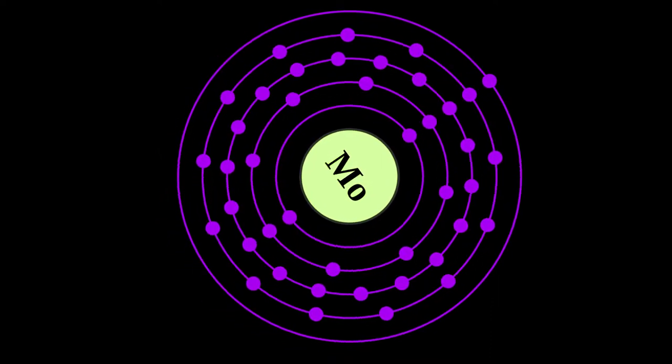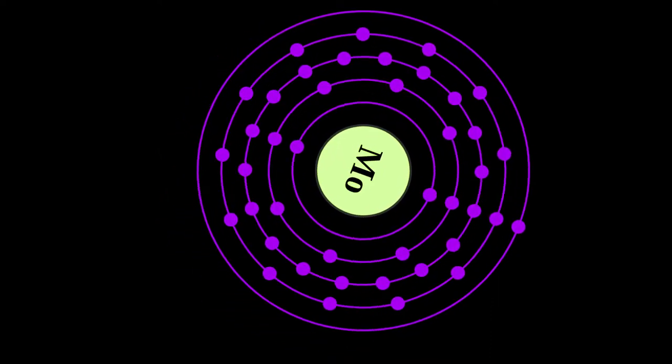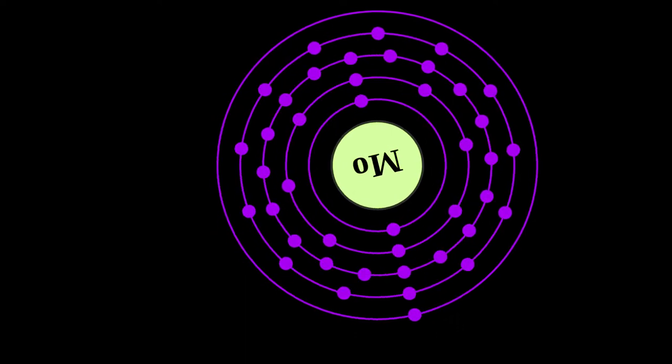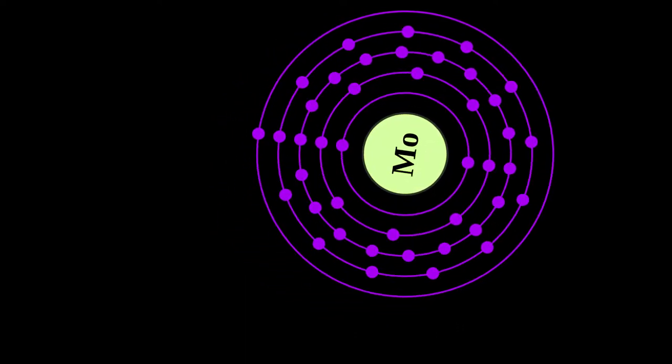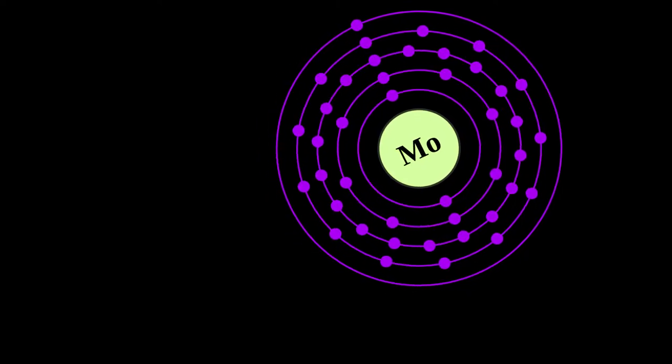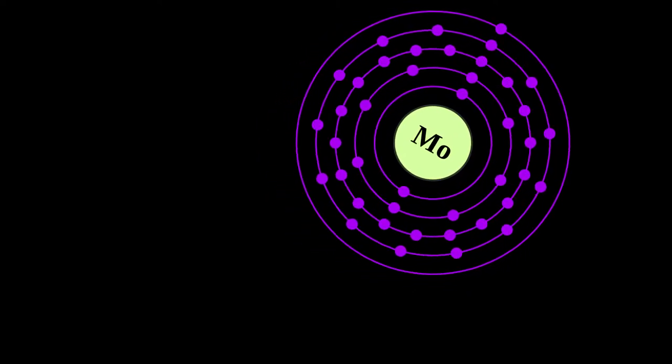Molybdenum is a chemical element with symbol Mo and atomic number 42. The name is from Neo-Latin molybdenum, from ancient Greek molybdos, meaning lead, since its ores were confused with lead ores.